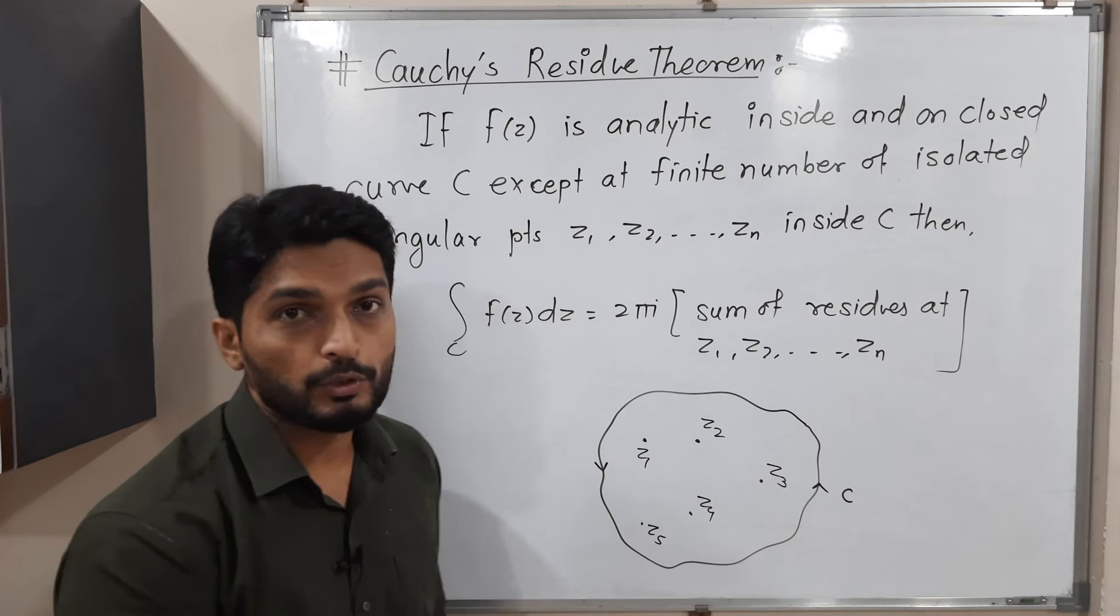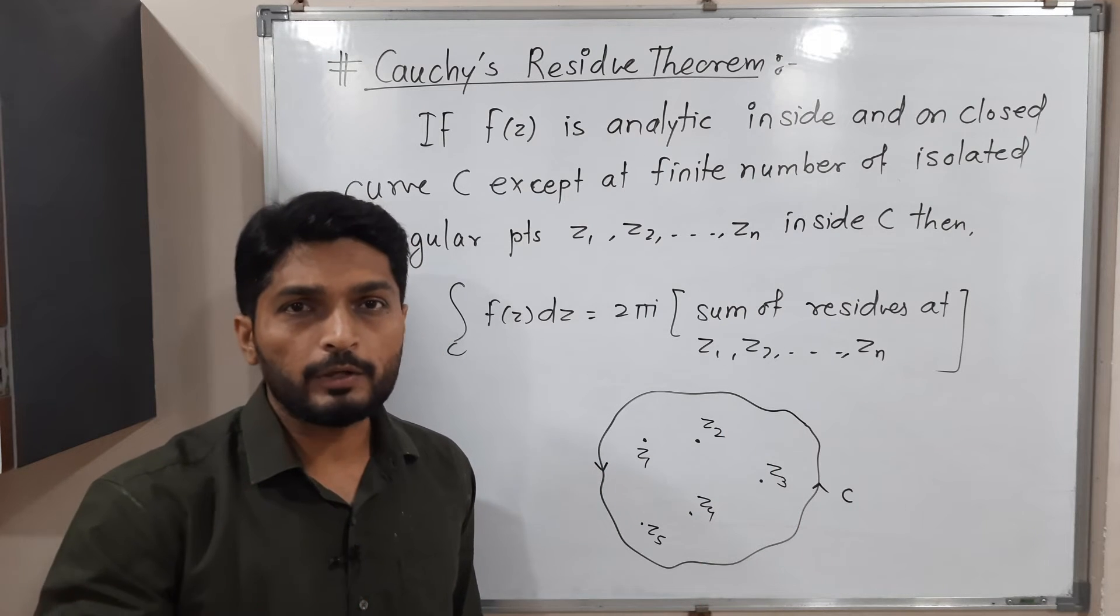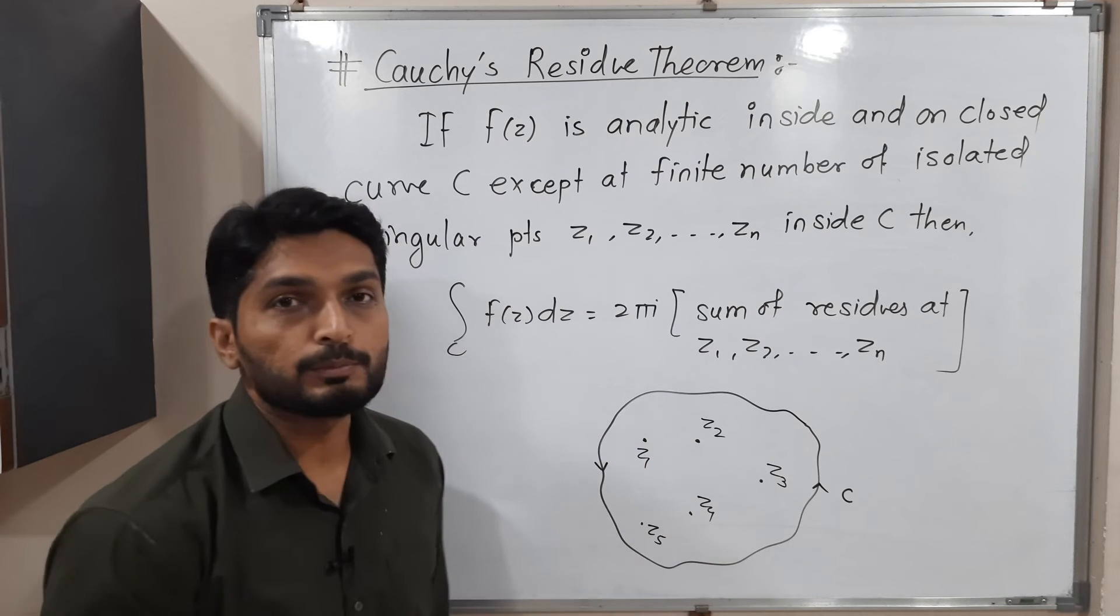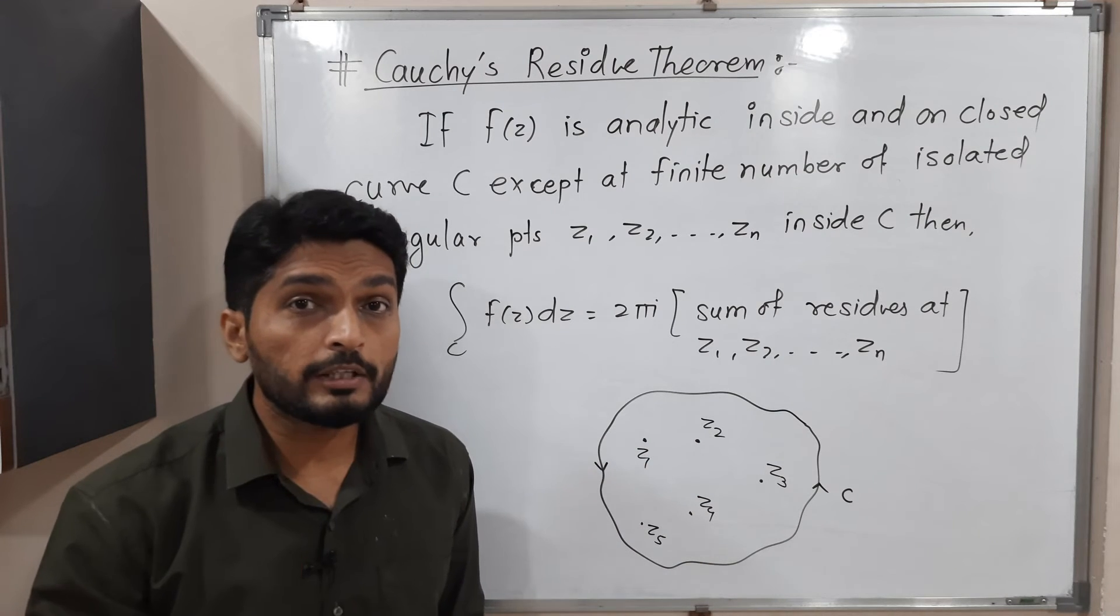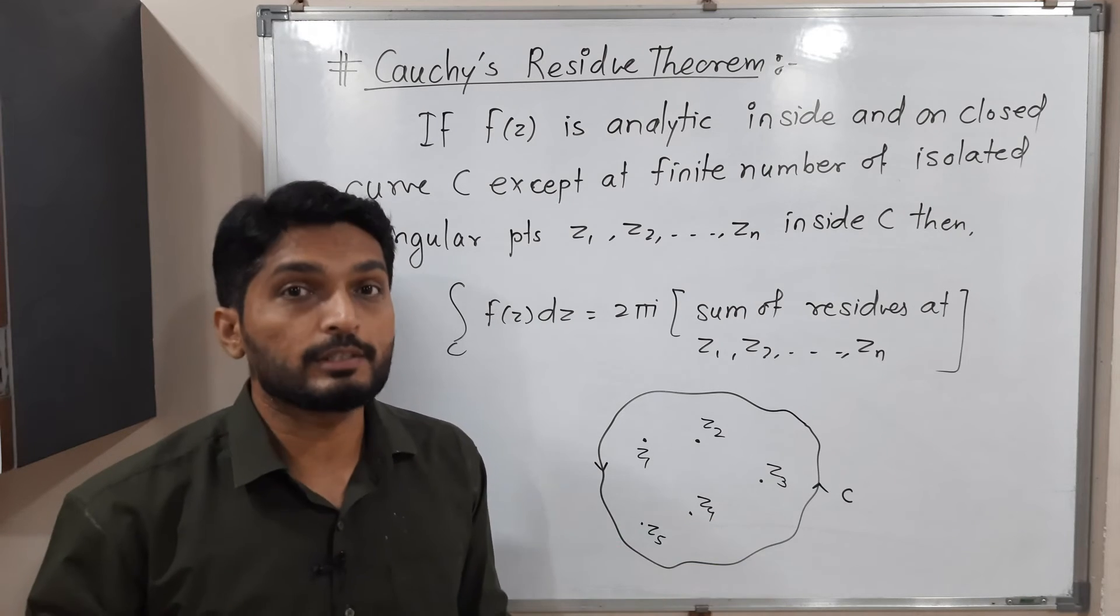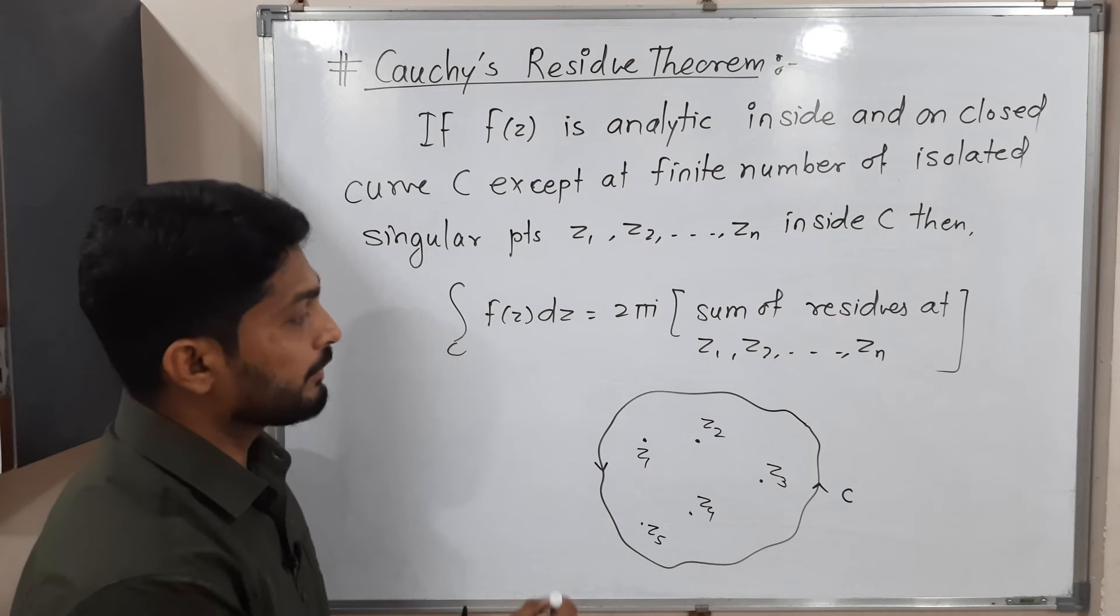should not be infinitely many points—2, 3, 4, 5, 10, whatever—but the number of those singularities must be finite, and those singularities must be isolated singularities, that means separate singularities. Then, if all these things are true, then the value of the integration can be obtained using this formula: 2πi times the sum of residues. So what